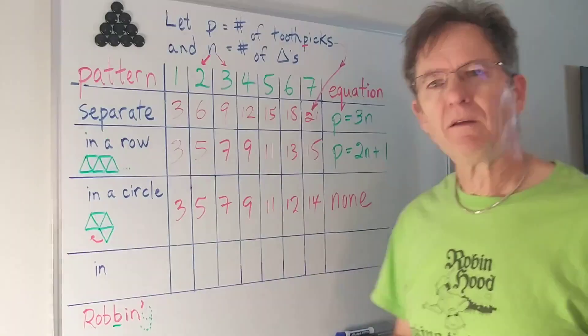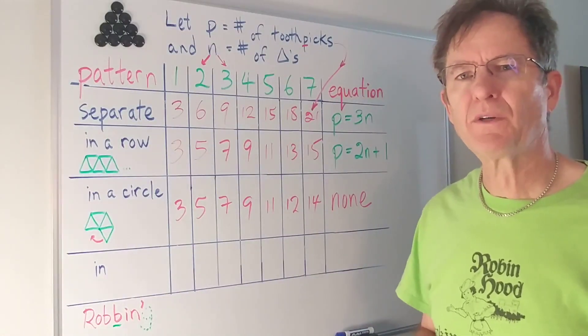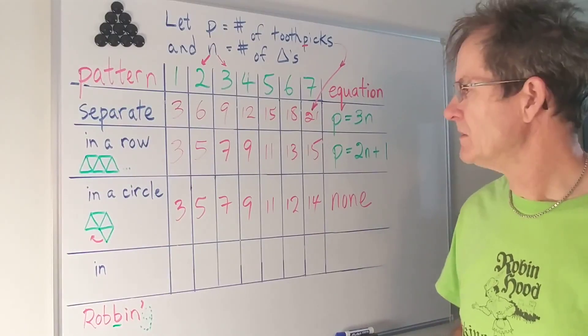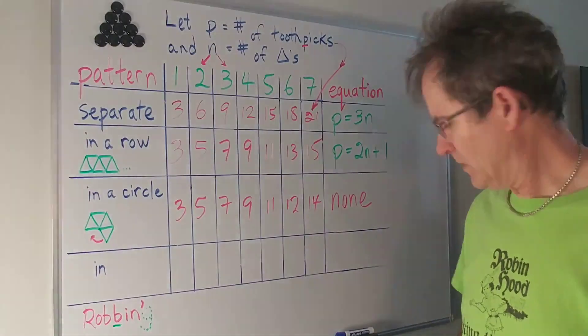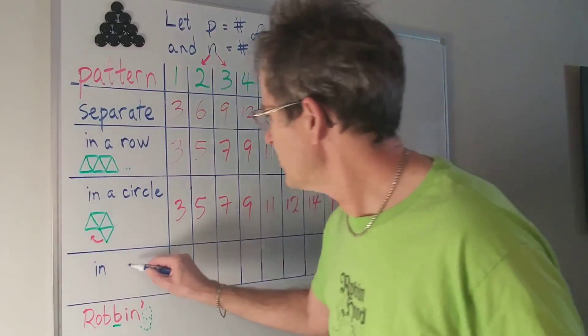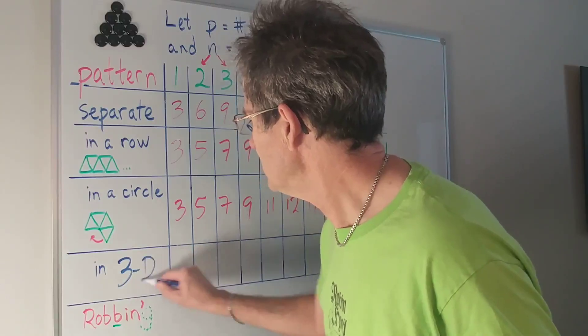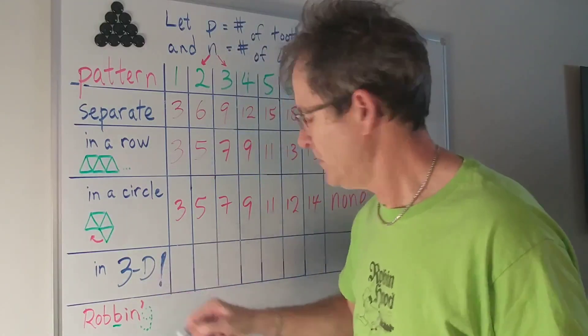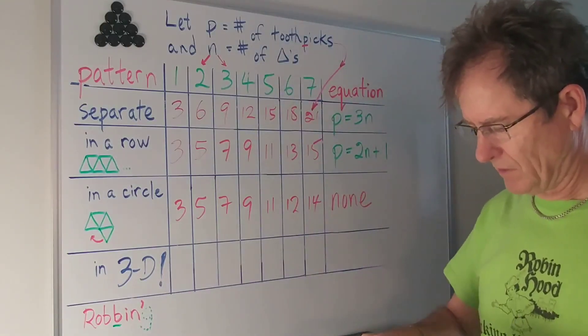Can you think of a way of making triangles with even fewer toothpicks? Does anything come to mind? Well what if we for example do it in three dimensions? Could we reduce the number of toothpicks? Let's have a look.